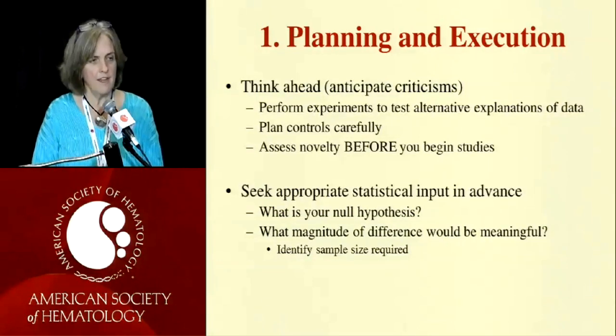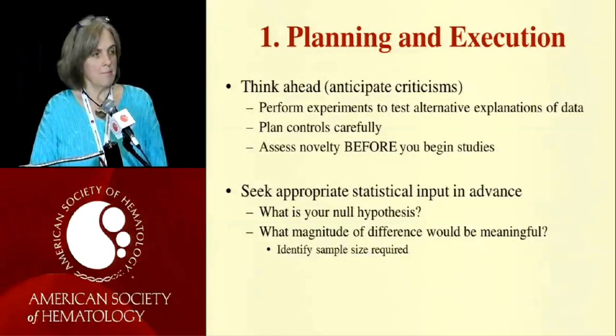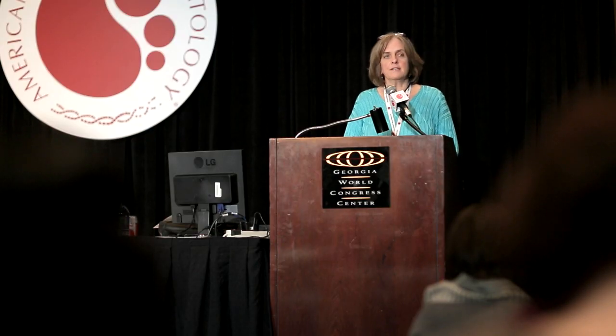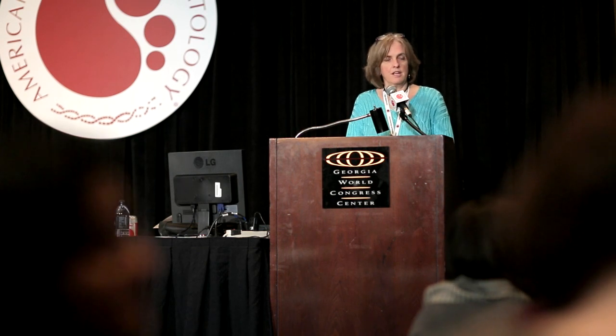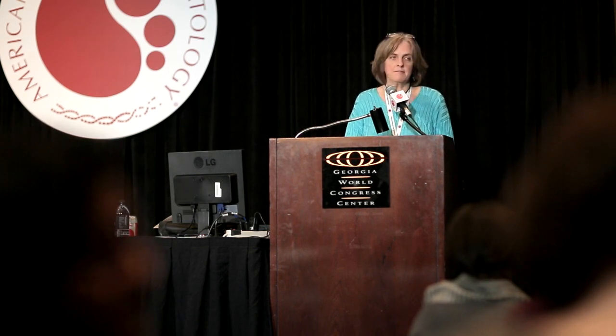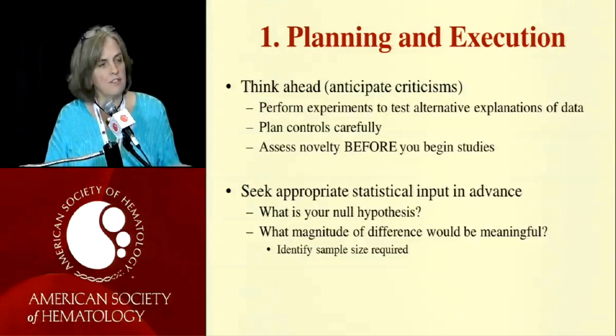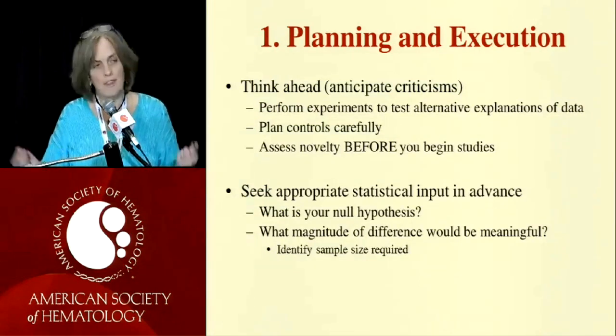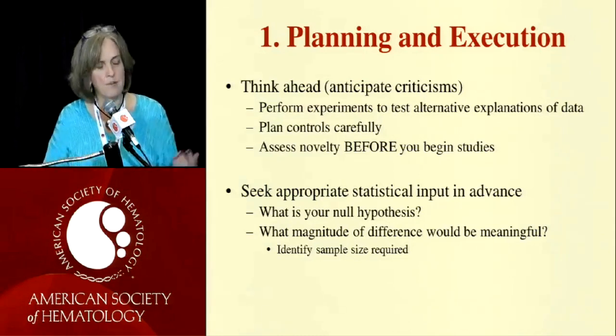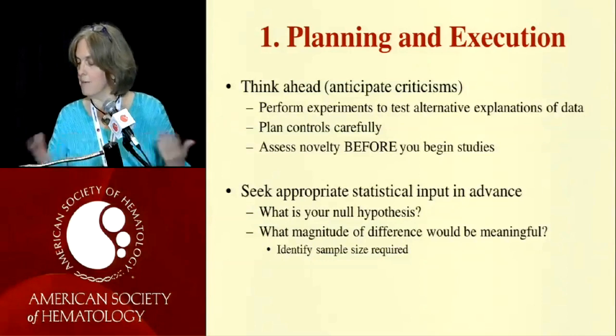It's important to get appropriate statistical input in advance. For most clinical studies that's pretty automatic — IRBs, DSMBs, and drug companies automatically get statistical input to protect patients by not doing too many or too few patients in a trial. But for animal studies and laboratory studies it's much less frequent, so you need to seek it out. Think about what magnitude of differences would be biologically meaningful, determine measurement error, and come up with an appropriate study size. Define your null hypothesis and go forward — don't just keep doing experiments until you show statistical significance. That's not appropriate.